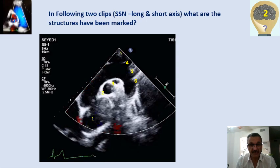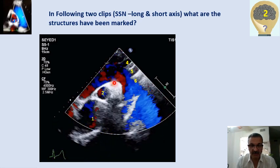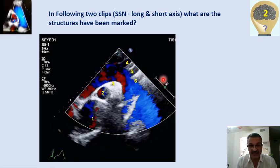We have two clips, both of them are a suprasternal notch. The first one is long axis, as you see here. I want you to determine each structure and what is the name of those structures. We have one rectangle. Assume all of those structures are anechoic. This one, and second one, this circular shape, third one, this almost elliptical or half partial circular shape, and these three cylindrical structures. There is another structure here — if you can name it, we are going to test your ultrasound physics and anatomy knowledge.